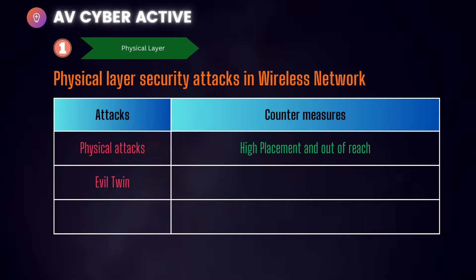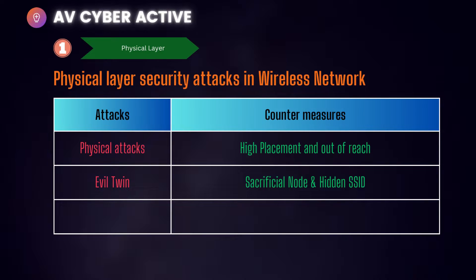Next is placement of an evil twin. This is where an attacker places a network with a name similar to your own network, making your wireless network very vulnerable. If a legitimate user connects to the evil twin or rogue access point, they may end up sending all their information to the attacker. One countermeasure is to use a sacrificial node — a sensor that stays active in proximity to the attacker to protect other sensors, at the risk of itself being detected and destroyed.